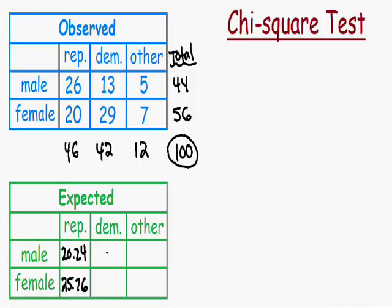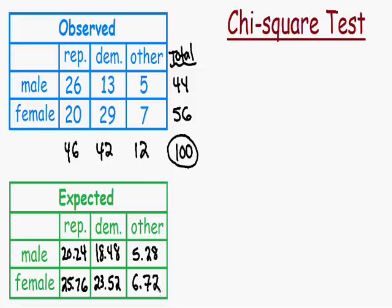To get the expected value of male Democrats, you would multiply the total number of males times the total number of Democrats, all divided by the grand total. To save time, I'll fill in the rest of the expected values. Now that we have our expected values and our observed values, we can perform our chi-square test to see if the observed values fit the expected values.